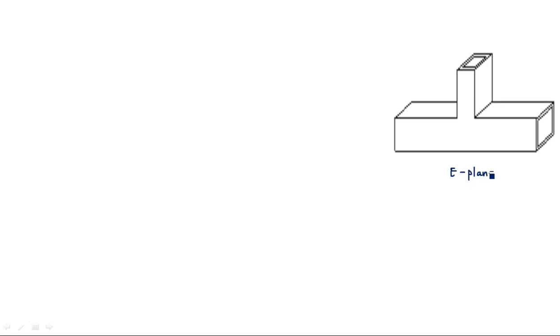First, we need to take the E-plane junction diagram. This is the E-plane T-junction where the third port is in the direction of the electric field — that's why it is called E-plane. The first port and second port are always out of phase. You should remember this point before the calculation of S-matrix parameters: when input is given at the first port, the output coming from the second port is out of phase.